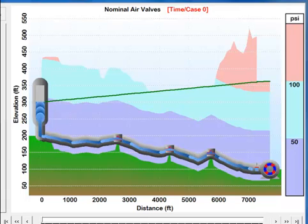Now I want to look at the same transient problem with some surge protection in the form of air vacuum valves. These are valves that emit air into the system when the pressure drops and expel it when the pressure goes back up. They're nominal air valves which mean they have a single orifice for emitting the air and expelling the air.